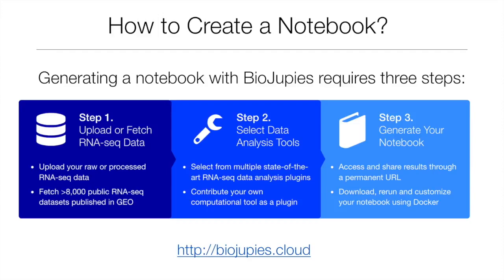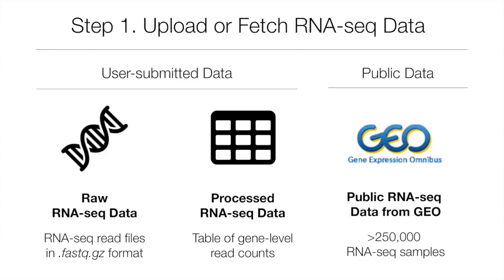To complete the first step, three different options are available. Users can either upload their own raw RNA-seq data in the FASTQ format, upload processed RNA-seq data as tables containing gene counts, or fetch from over 8,000 publicly available datasets published in the Gene Expression Omnibus.